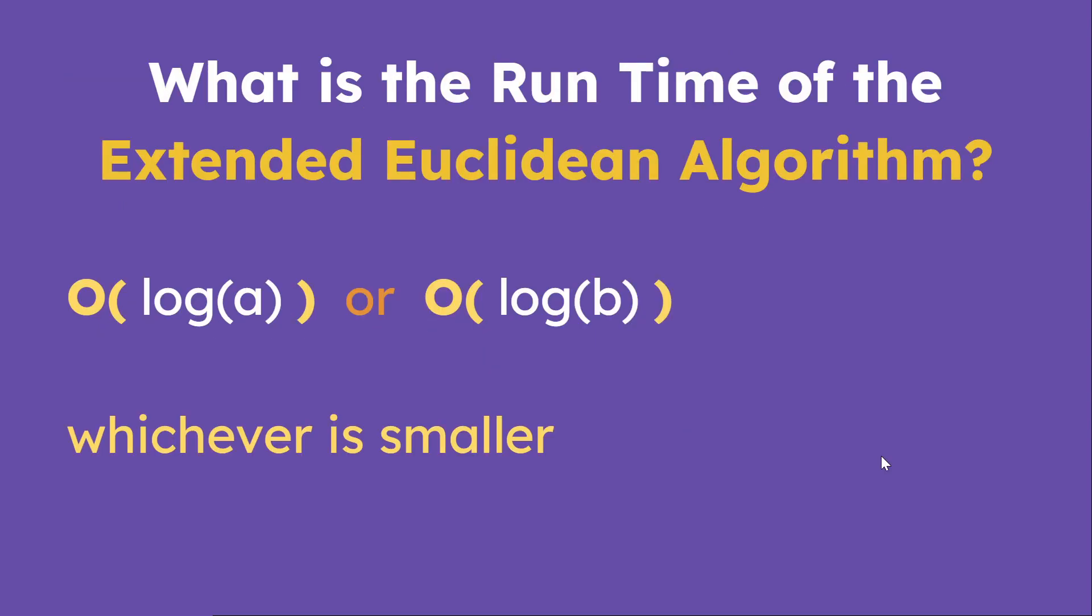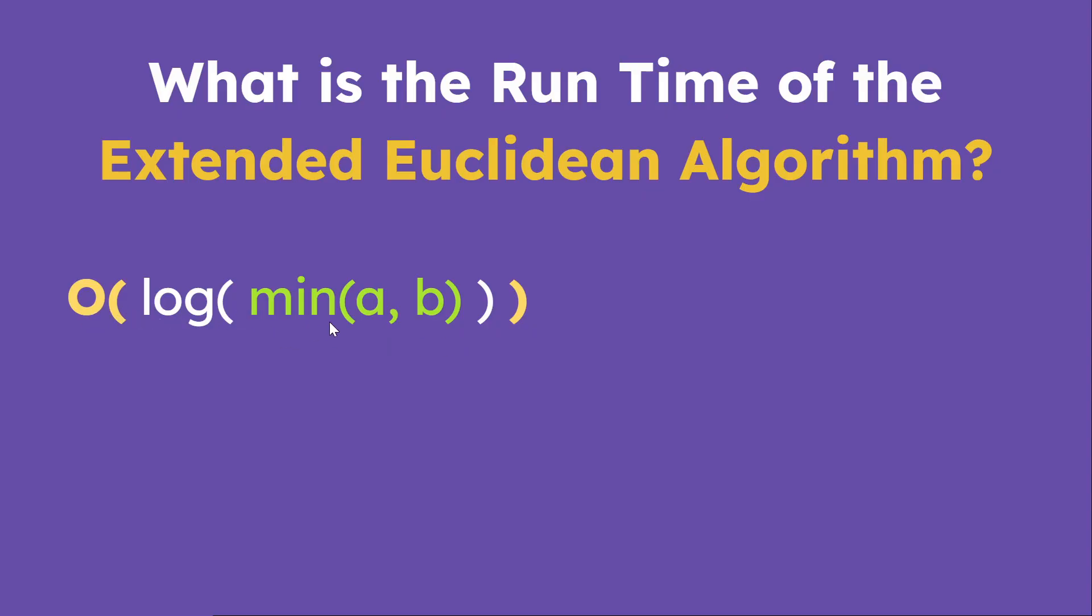You might be wondering what is the runtime of the extended Euclidean algorithm. Well, it's going to be O of log A or O of log B, whichever integer is smaller. Now you can rewrite this as O of log of min AB, which means the exact same thing.